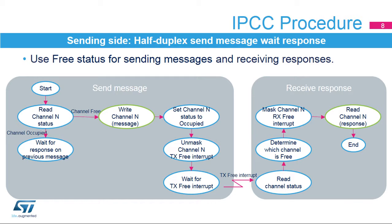The half-duplex procedure allows the transfer of a message from a sending side to a receiving side, followed by a response sent from the receiving side back to the sending side using a single shared buffer. In the half-duplex procedure, the sending side will first check the channel status flag. If the channel status flag indicates the channel is occupied or flow-off, due to the receiving side not yet having sent a response to a previous message, the sending side waits for the response. When the channel is free, the message can be written in the channel data buffer. Subsequently, the channel status flag is set to occupied, which triggers a channel-occupied interrupt for the receiving side, and the channel-free interrupt is masked.